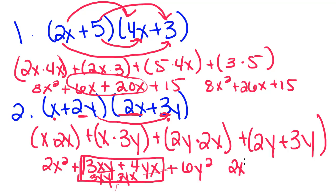So we get 2x squared plus 3 plus 4 is 7yx, plus 6y squared. And I could have written this middle term as 7xy. It really doesn't matter. It's whatever you personally prefer.